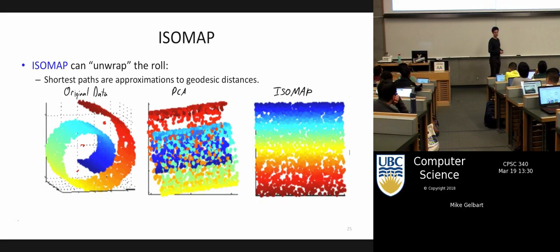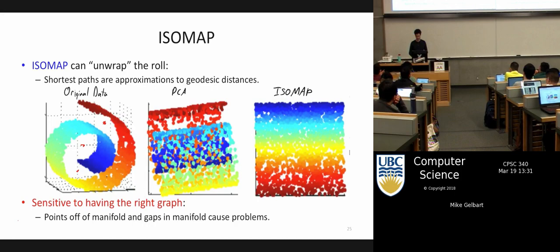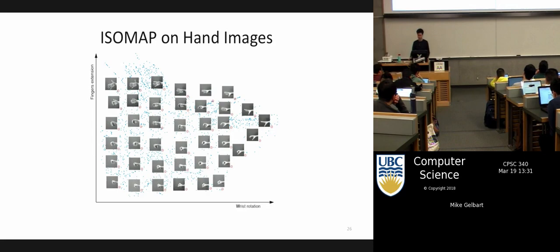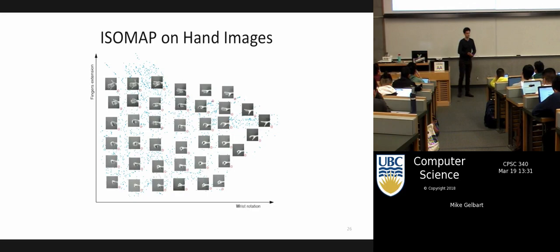Thinking of those letter A images is a nice example of why it would be useful to get those true features for each example. ISOMAP works assuming we can get a reasonable graph. A great example is images of hand and wrist movement — each image is a training example. There are two real dimensions from a human perspective: rotation and the hand opening and closing. Being able to extract this in unsupervised ways is pretty impressive.